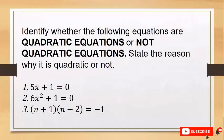Now let us try more exercises. Remember, you are to illustrate quadratic equations. Identify whether the following equations are quadratic equations or not, and state the reason why. Number 1: 5x plus 1 equals 0. Number 2: 6x² plus 1 equals 0. Number 3: the quantity of n plus 1 times the quantity of n minus 2 equals negative 1. You are given two minutes to answer. Type your answers in the comment section — I will respond once you send your answers.